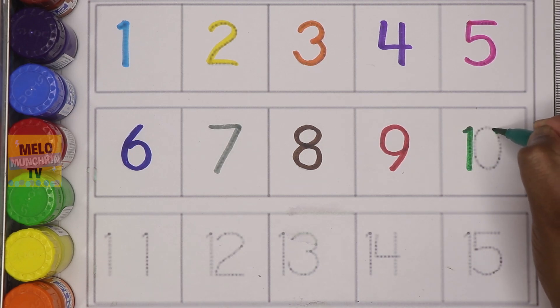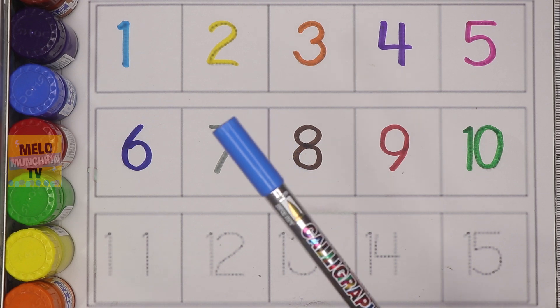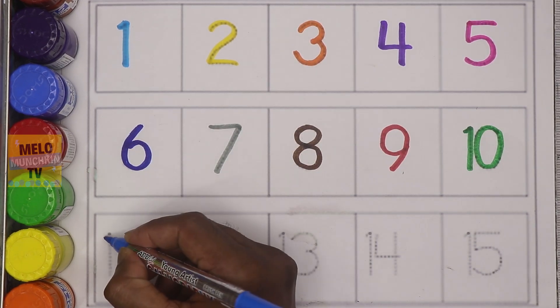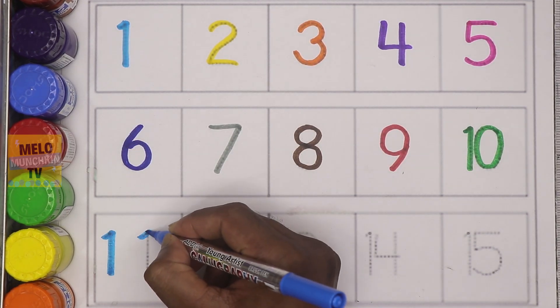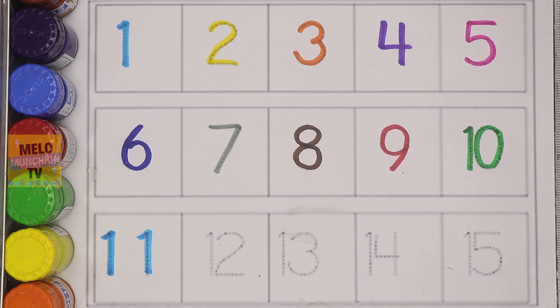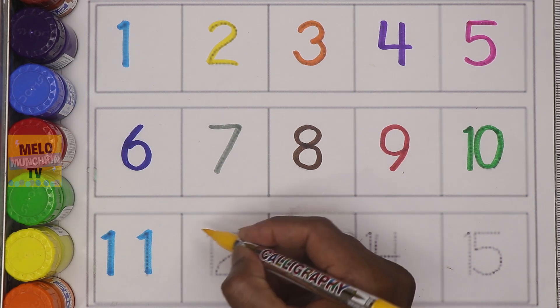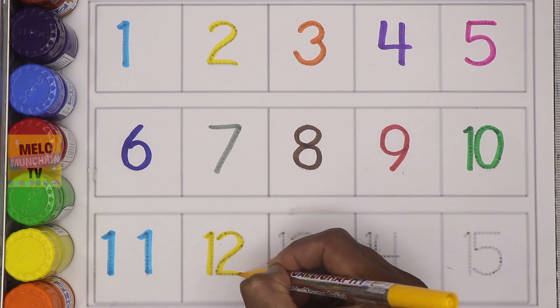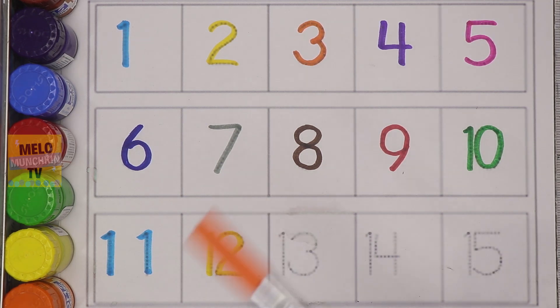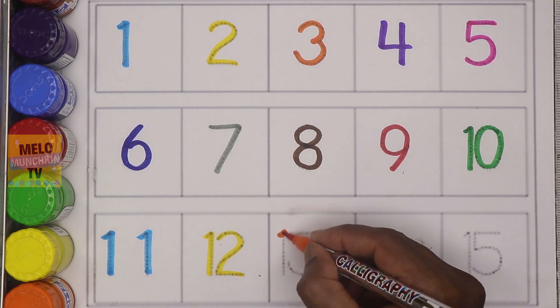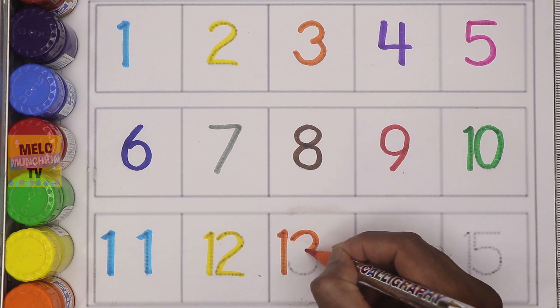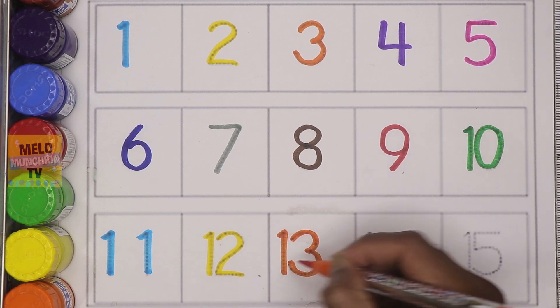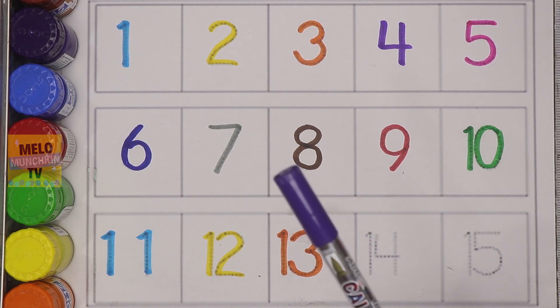Dark green color - ten: T-E-N, ten. Light blue color - eleven: E-L-E-V-E-N, eleven. Yellow color - twelve: T-W-E-L-V-E, twelve. Orange color - thirteen: T-H-I-R-T-E-E-N, thirteen.